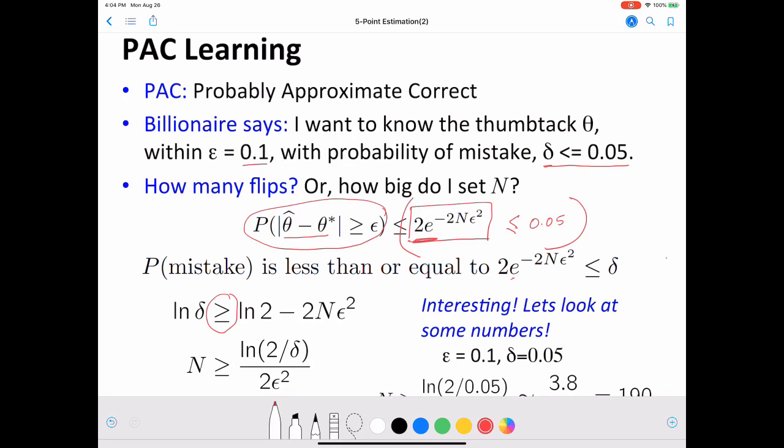Now substituting some actual values, epsilon equal to 0.1, delta equal to 0.05, we get 190 tosses. It's not a lot of tosses, right? So we can reliably estimate theta and bound it to 0.05 by tossing the coin for 190 times.